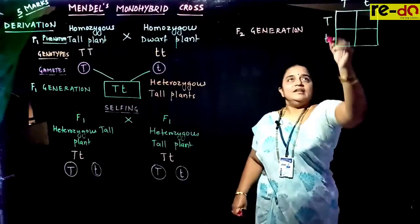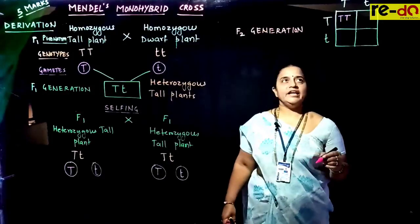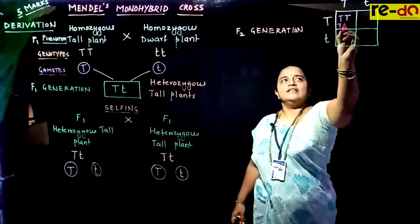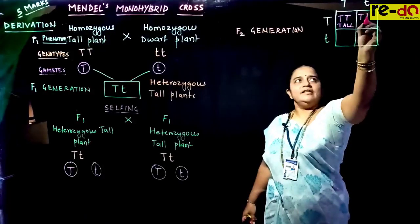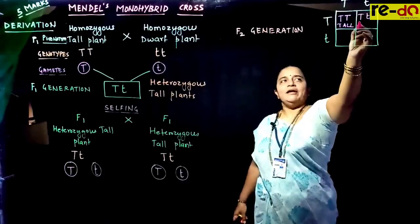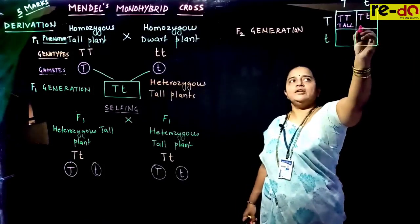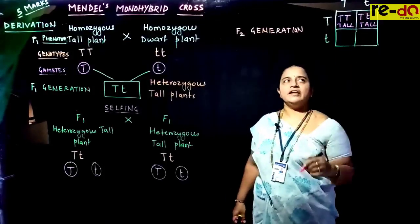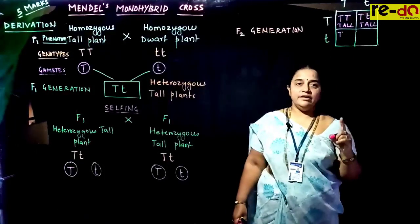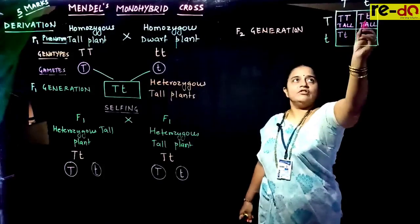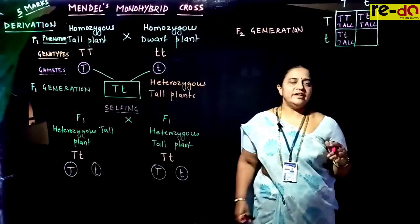When the two gametes fuse: T from male and T from female gives capital TT — it is homozygous, and the expression is tall. T with small t gives Tt — since dominant capital T suppresses the expression of small t, tall is dominant over dwarf, so the expressed trait is tall. When writing the genotype, always write the capital letter first followed by the small letter.